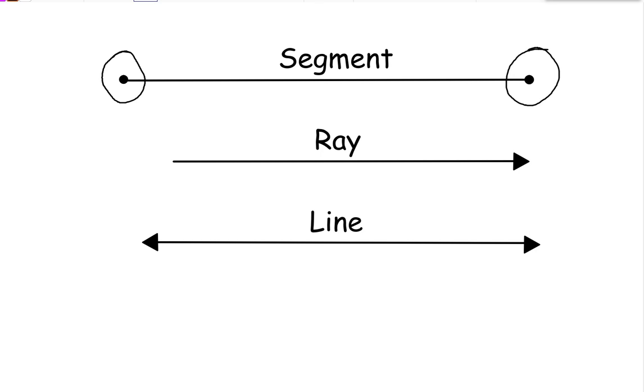The second type is a ray. A ray has a beginning, usually with a dot or sometimes just blank, and an arrow that points off to one side. Now, the arrows show that this line continues on forever. I could keep going and going and going and it will never stop.